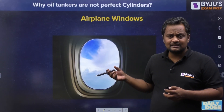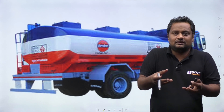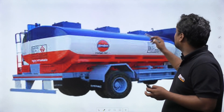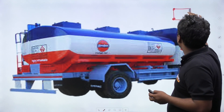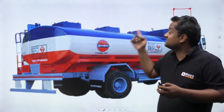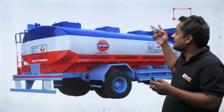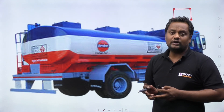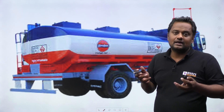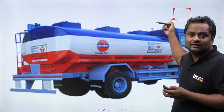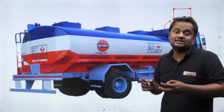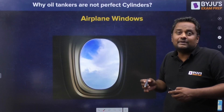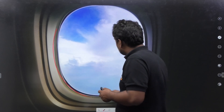In oil tankers, there is liquid inside under pressure. If I make a rectangular tanker, these corner points have to be joined by welding or riveting. Due to stress, there is discontinuity at those joints. When we fill the tanker with oil or any other fluid, pressure acts all around, and that pressure can break or cause leakage at these critical joints due to stress concentration.